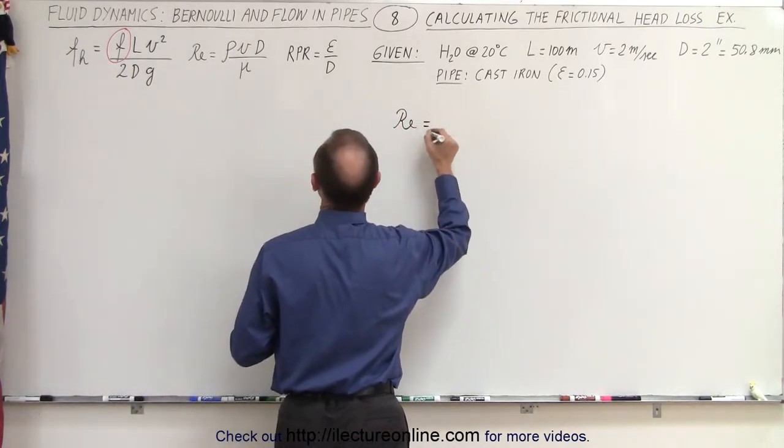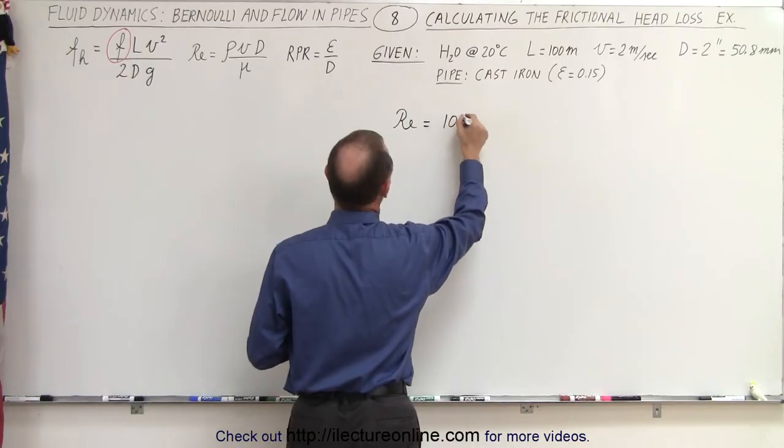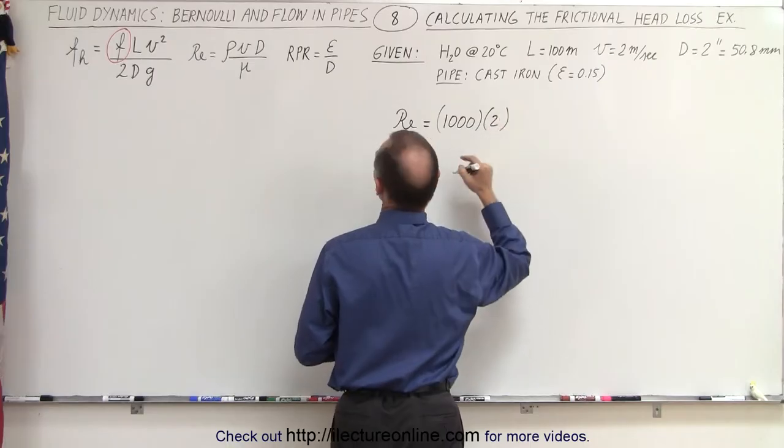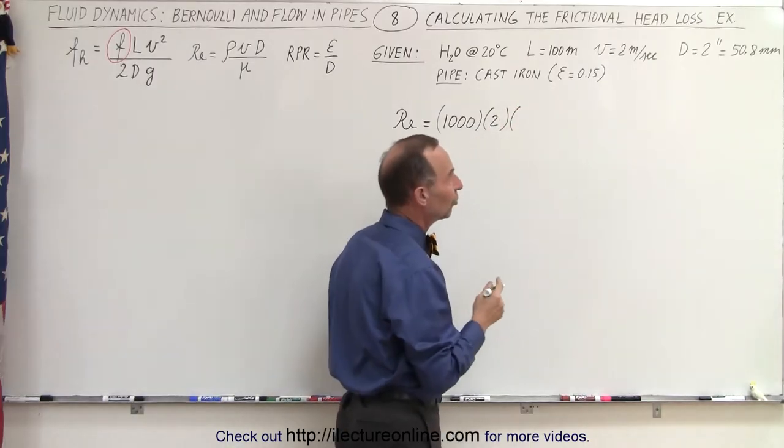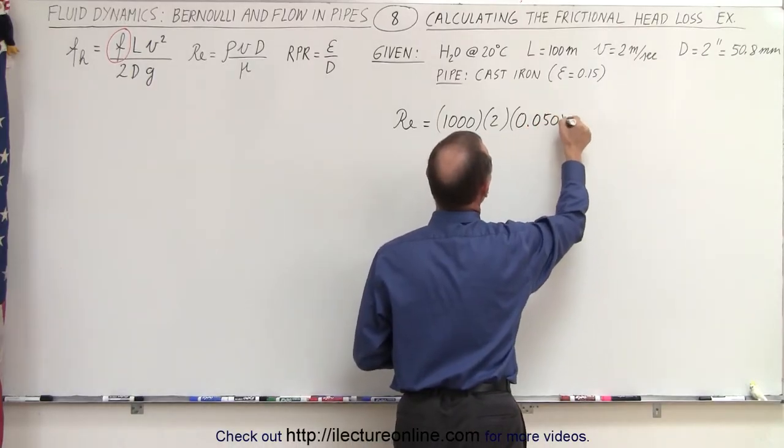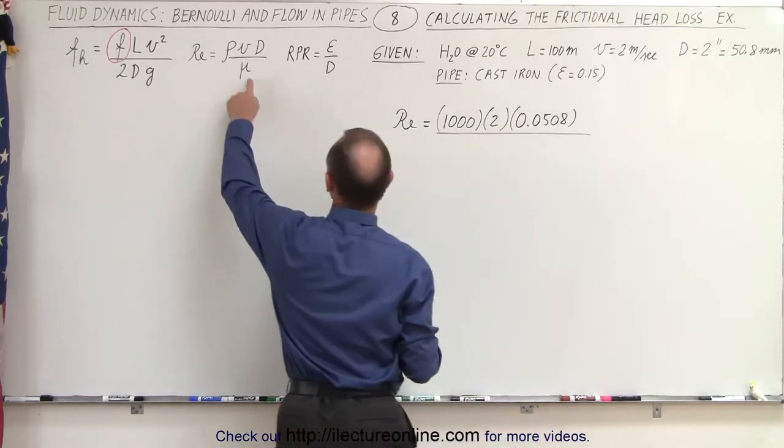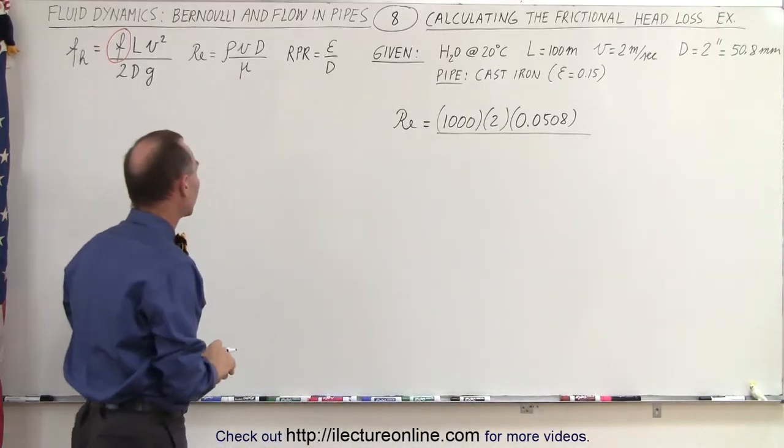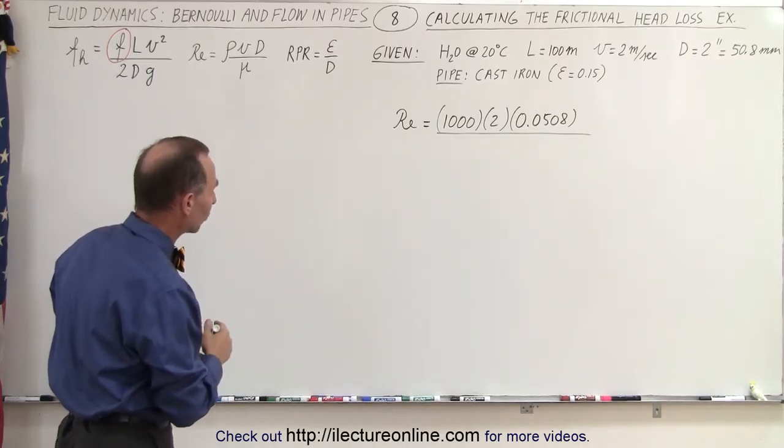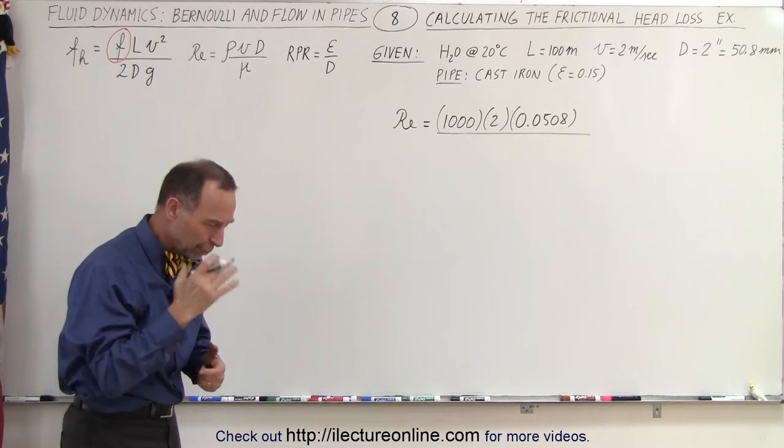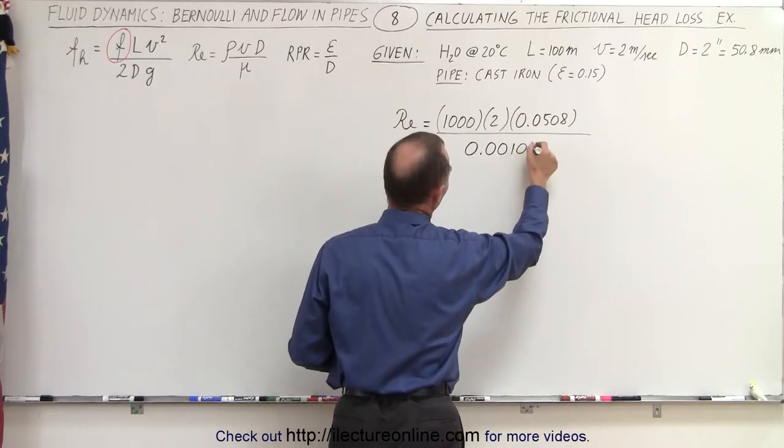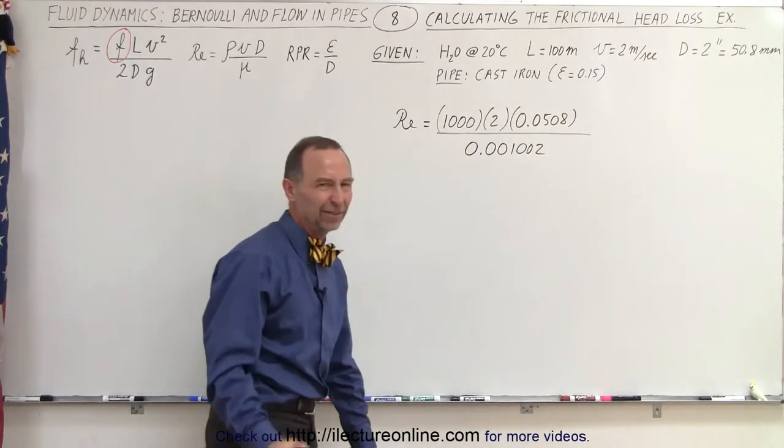So the Reynolds number is going to be equal to the density for water that's 1000 kilograms per cubic meter. The velocity we set was going to be 2 meters. The diameter was going to be 2 inches. We need to convert that to meters which is 0.0508 meters and we divide that by the dynamic viscosity coefficient of the water at 20 degrees centigrade, which was going to be 0.001 approximately.